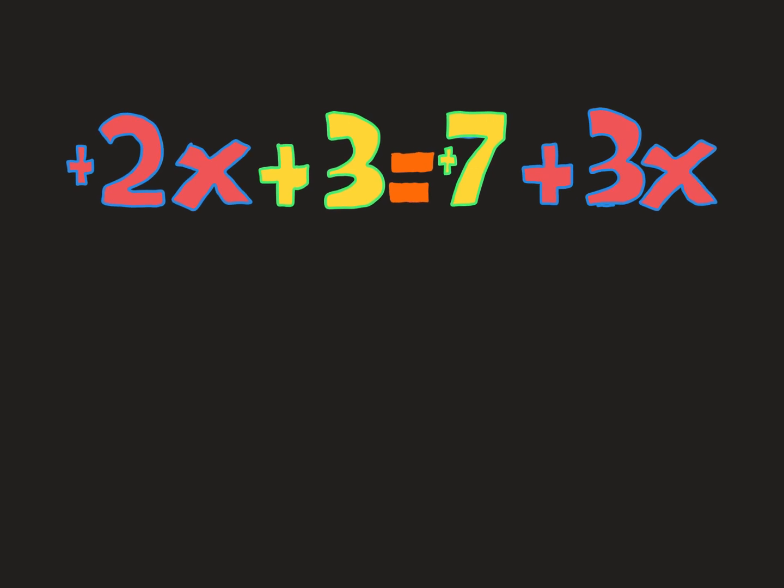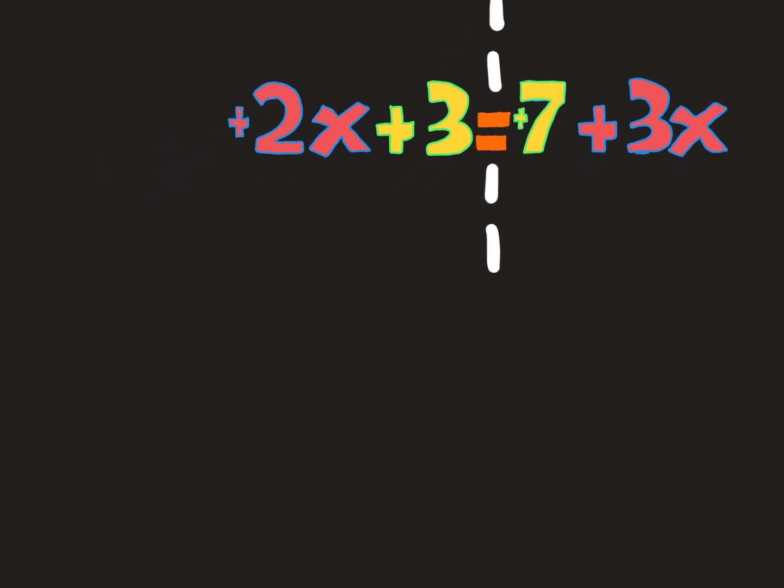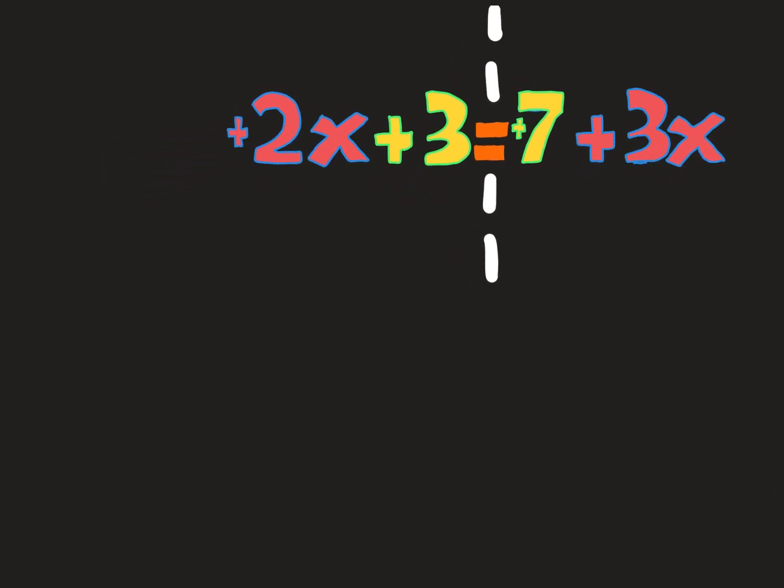So I can pretend there's this barrier right at the equal sign, and if I want to switch a term from one side to the other and it crosses the barrier, I can do that. I just have to switch its sign when I do this. So I'm going to take the 3x, and I want to put that 3x over with the 2x because I want all the x's on one side. And when I pick it up and move it across the equal sign, notice when it hits that barrier, it turns into a negative 3x, and I can put it on this side.